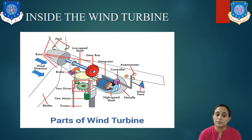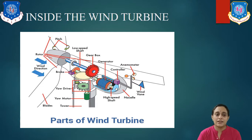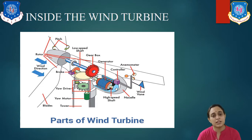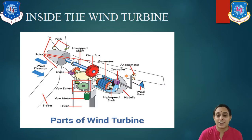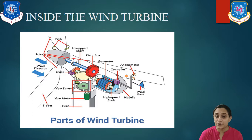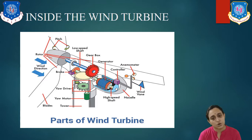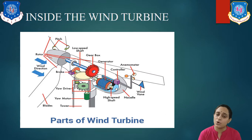The controller is really the computer brain of the turbine. It will receive information and lets the wind turbine start when the anemometer tells it there is enough wind. The controller also makes sure that the rotor, when it is turning, is always pointed towards the wind.